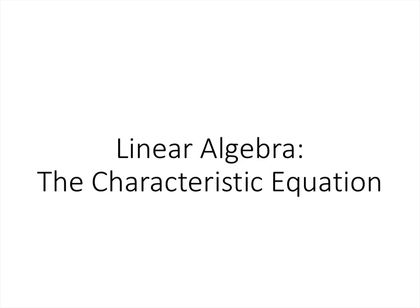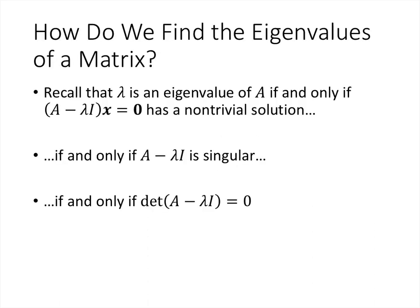In this lecture we'll talk about the characteristic equation, which we use to find the eigenvalues of a matrix. Lambda is an eigenvalue of A if and only if the equation (A minus lambda I) times x equals zero has a non-trivial solution. That happens if and only if A minus lambda I is singular — in other words, non-invertible — which happens if and only if the determinant of A minus lambda I equals zero.